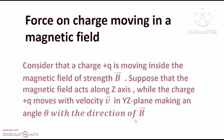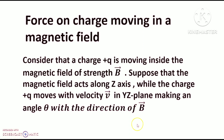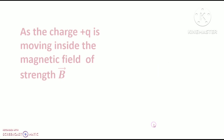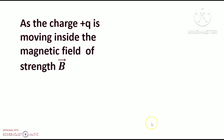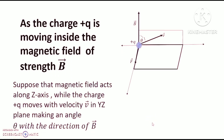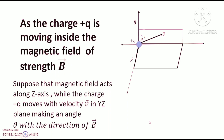Hello dear friends, welcome to my channel. Today's discussion is force on a charge moving in a magnetic field. Consider that a charge plus q is moving inside a magnetic field of strength B. The magnetic field acts along the z-axis, while the charge plus q moves with velocity v in the y-z plane, making an angle theta with the direction of B. This is shown in the figure: plus q, force F, velocity v, and B is along the z-axis.